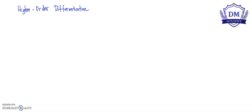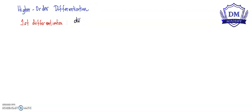Welcome back to DM Academy. Let's have the higher order differentiation of the given function. As we all know, the first order differentiation of the given function is denoted by dy over dx. Let's say we have the function f of x, or y is equal to f of x. The first differentiation or the first derivative of the given function is denoted by dy over dx, also known as y prime or f prime of x.